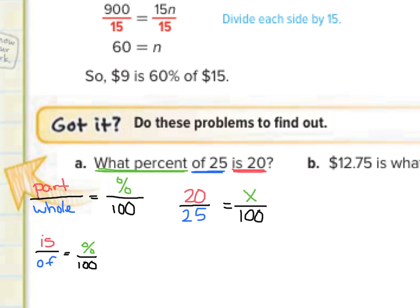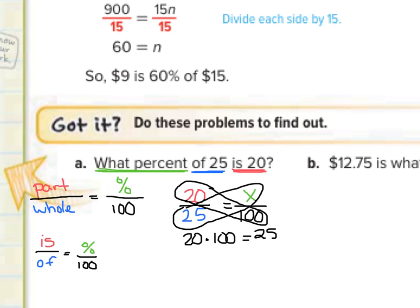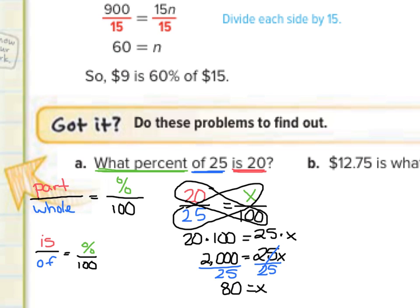That 100 is always going to stay the same. Now we get to use our cross products to solve. So we're going to take 20 times 100 and set that equal to 25 times x. 20 times 100 is 2,000 equals 25x. Dividing by 25 on both sides, 2,000 divided by 25 is 80. That 80 is our percent, so our answer is 80%. So 80% of 25 is 20.